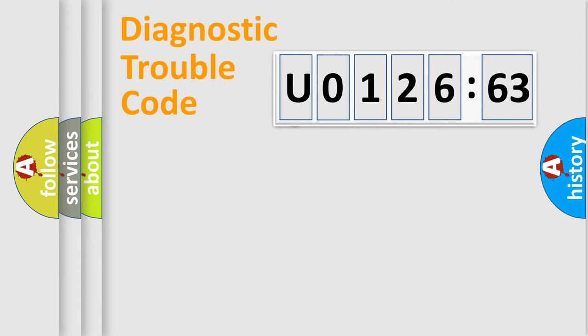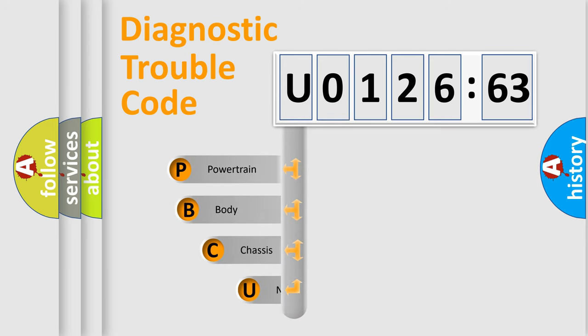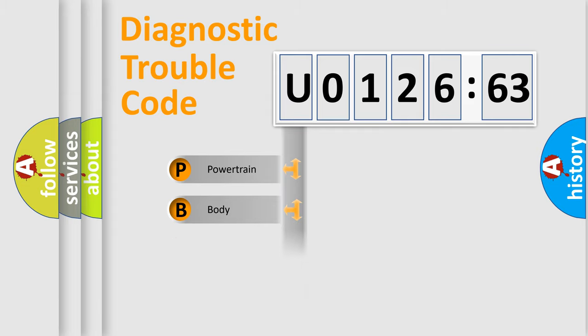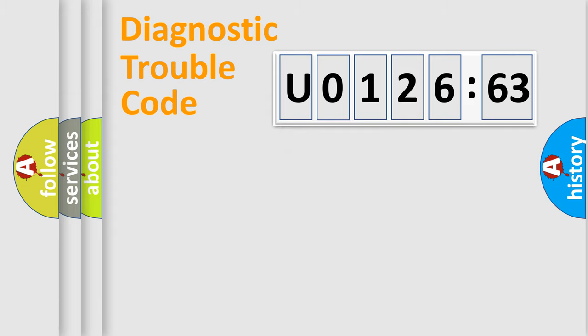Let's do this. First, let's look at the history of diagnostic fault code composition according to the OBD2 protocol, which is unified for all automakers since 2000. We divide the electric system of automobile into the four basic units: Powertrain, Body, Chassis, and Network.